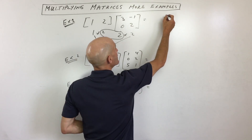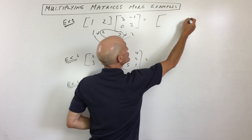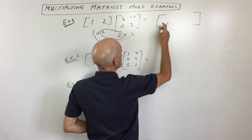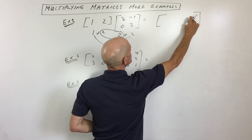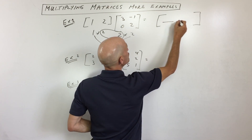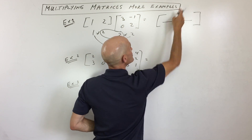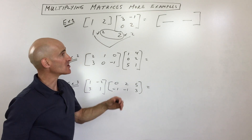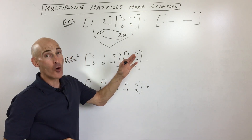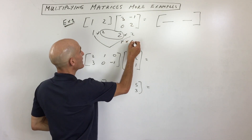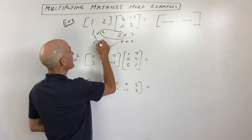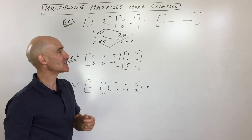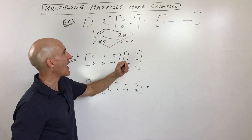So I'm going to draw what they call the resultant matrix, or the final matrix, that has one row and two columns. So I like to write that final matrix. Now it's always rows by columns, rows by columns, rows by columns, forever and ever. So if you can remember that, you got it.